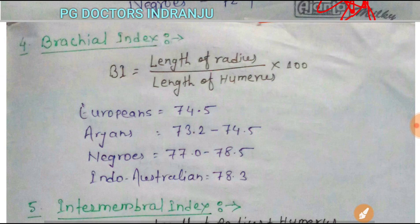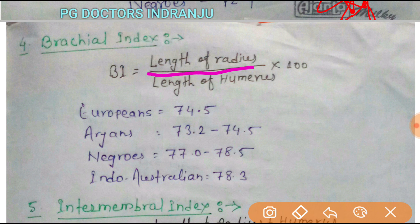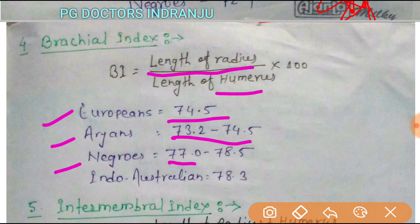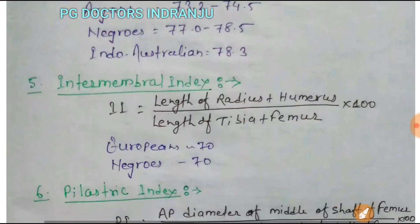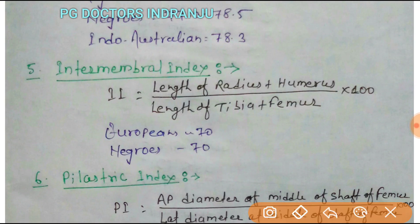Next is the brachial index. The formula of the brachial index is the length of the radius divided by the length of the humerus, multiplied by 100. In Europeans it is 74.5, in Aryans it is 73.2 to 74.5, in Negroes it is 77 to 78.5, and in Indo-Australians it is 78.3. The greater value indicates that radius length is longer than humerus length.